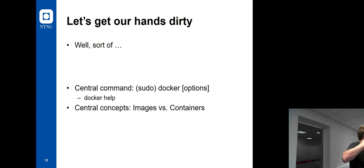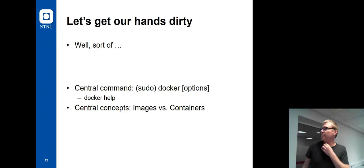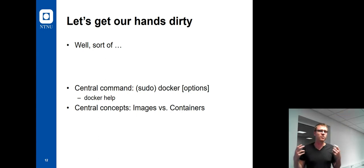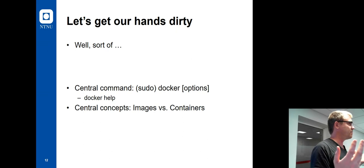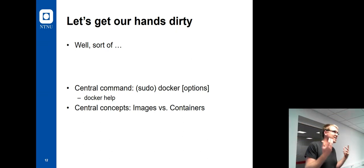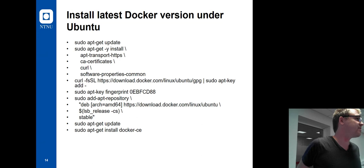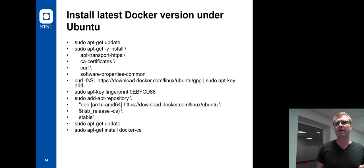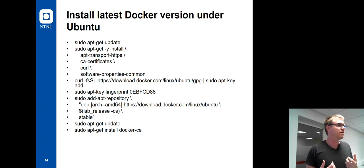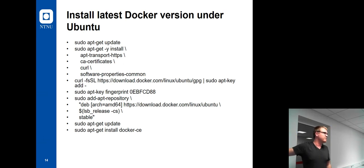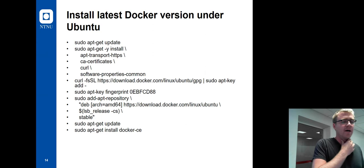Images versus containers: containers are running and images are templates for containers. You could use an object-oriented metaphor — an image is like a class which is not running, and a container is an instantiated object. Before you run Docker, a word of warning: the Docker version installed in your OS repository is usually quite out of date and won't have some functionality you need. You want the reasonably latest supported version. The first thing to do is uninstall Docker from your current machine if already installed, then install from the official Docker repository.